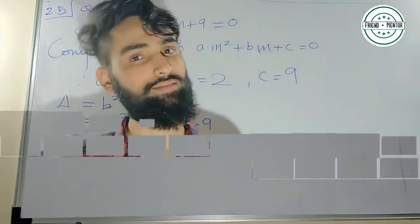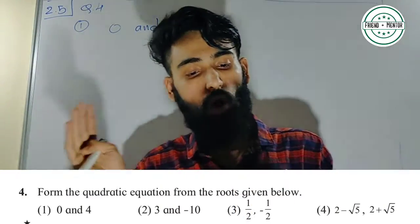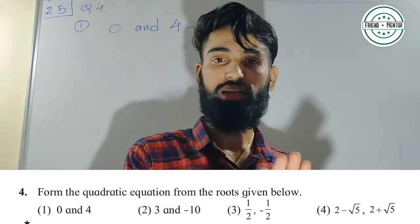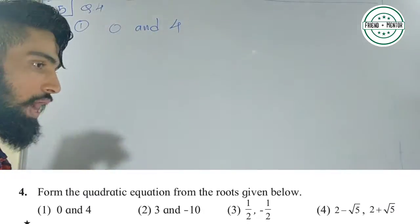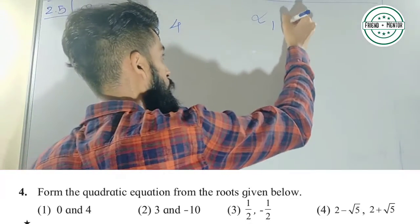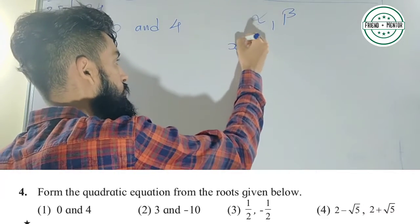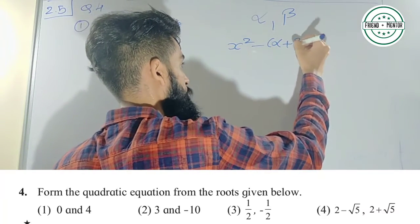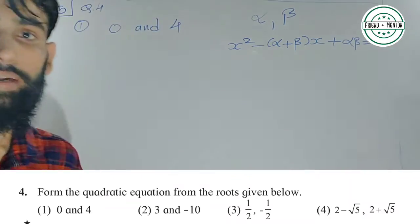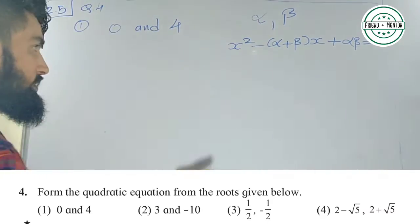Aap question number 4 ko dekhte hain. The question number 4 is: form the quadratic equation from the roots given below — yani ki hame roots de diye hain aur quadratic equation find out karna hai. Aapko pata hoga, jaise humne last video me discuss kiya tha, agar alpha aur beta roots hain kisi bhi quadratic equation ke, toh quadratic equation is x² − (α + β)x + αβ = 0.